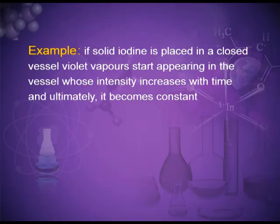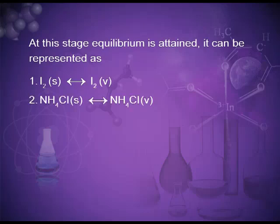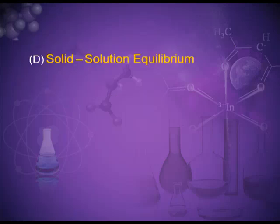The third is solid-vapor equilibrium. This type of equilibrium is attained for solids which undergo sublimation. For example, if solid iodine is placed in a closed vessel, violet vapors start appearing whose intensity increases with time and ultimately becomes constant. At this stage equilibrium is attained, represented as I₂(s) ⇌ I₂(g). Another example: NH₄Cl(s) ⇌ NH₄Cl(g). Next is solid-solution equilibrium.